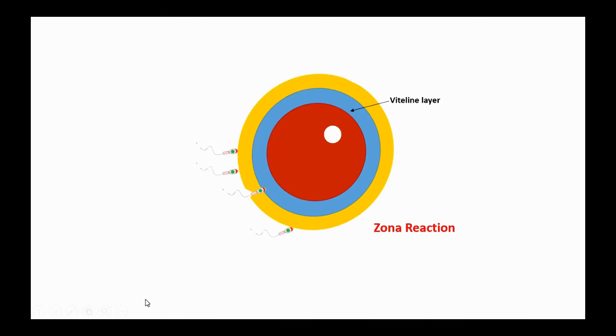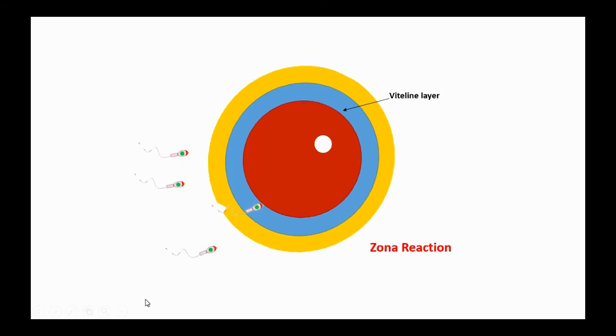Once the sperm penetrates the zona pellucida, it then passes through the vitelline layer of the oocyte. The cell membranes of the oocyte and sperm then fuse and break down at the area of fusion. Once the sperm enters the cytoplasm of the oocyte, the sperm pronucleus and the oocyte pronucleus fuse to form the zygote.